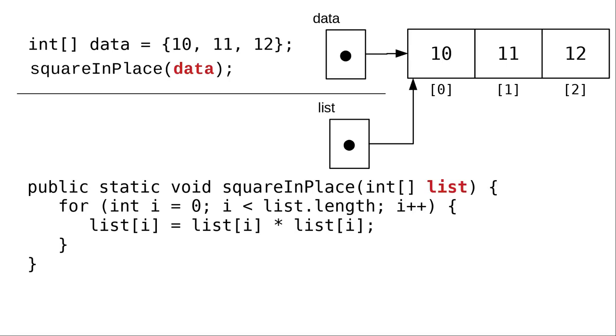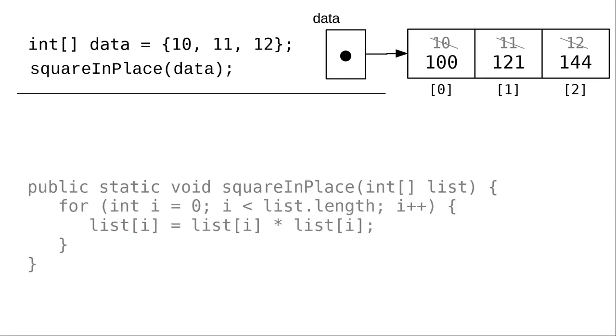That means that the reference to data is copied into the parameter list. The loop then changes the array referenced by the list parameter. And when the call finishes, data, which refers to the same area of memory, will have been changed in place.